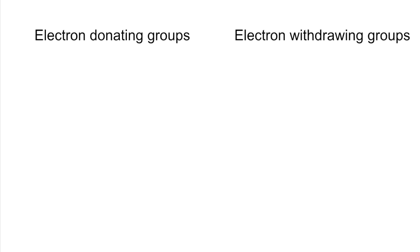A quick revision video on aromatic directing groups. There are two types of directing groups: electron donating groups and electron withdrawing groups.